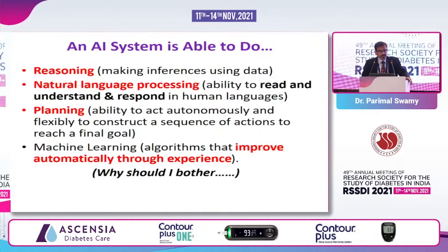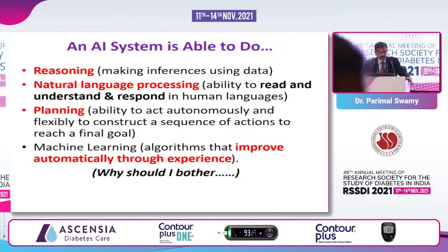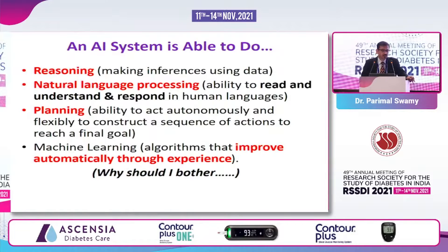An AI system is able to do reasoning. It can do natural language processing — that is, an ability to read, understand, and respond in human languages. It can do planning. And the machine learning function of the AI can improve the outcome or the prediction faculty of the artificial intelligence system automatically through its own experience.